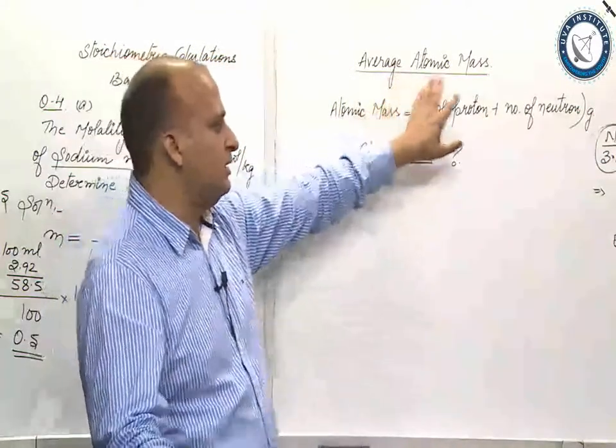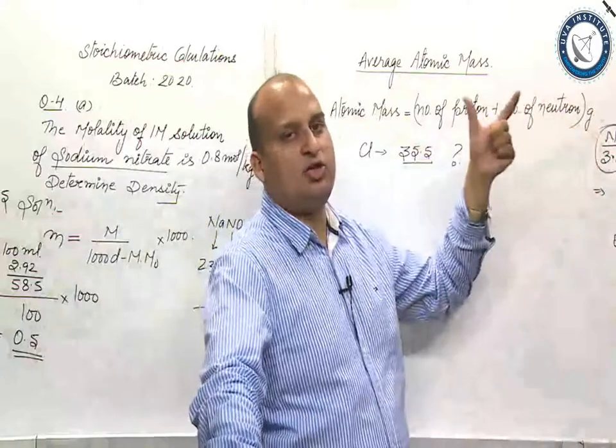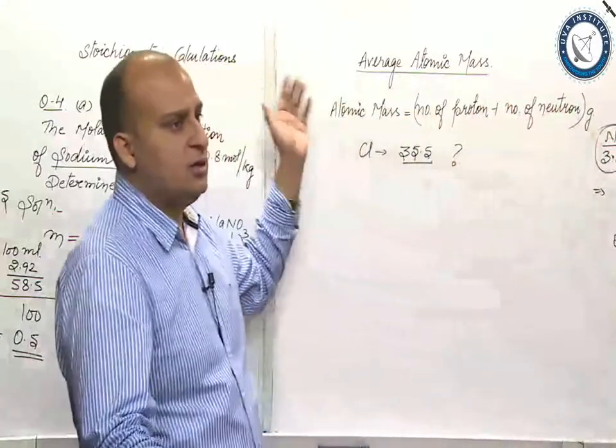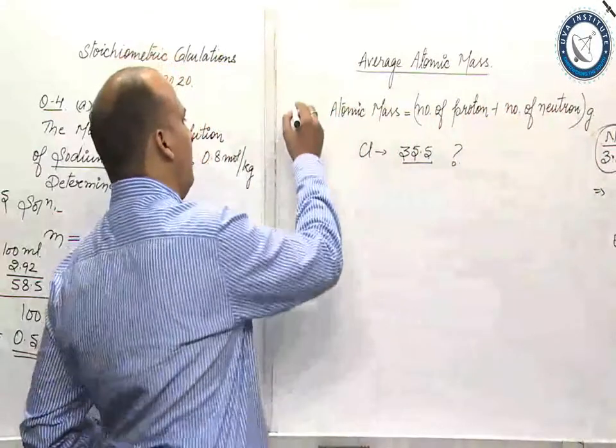If it were atomic mass, instead of gram, I would have written U. If it is gram atom, or I can write gram atomic mass.